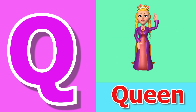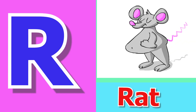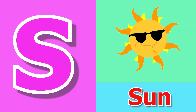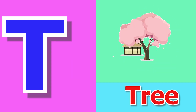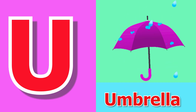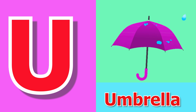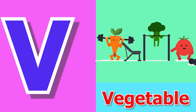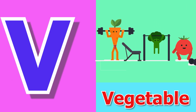Q for Queen, R for Rat, S for Sun, T for Tree, U for Umbrella, V for Vegetable.